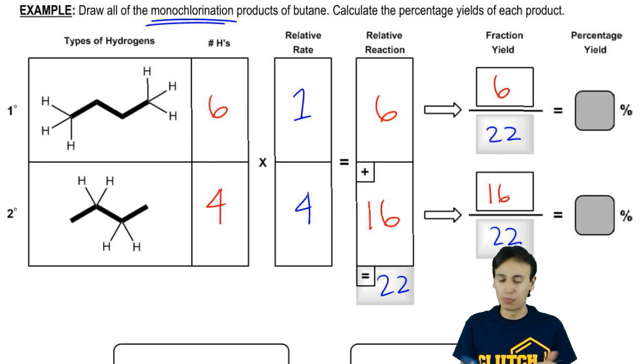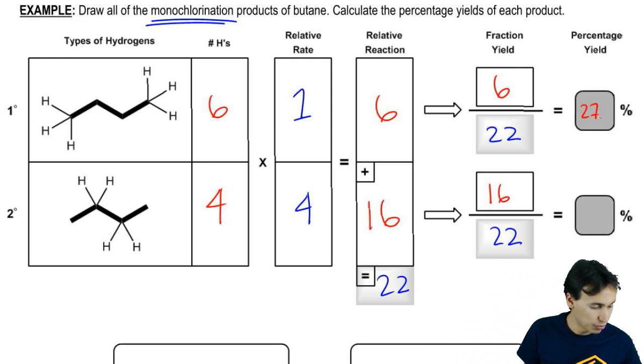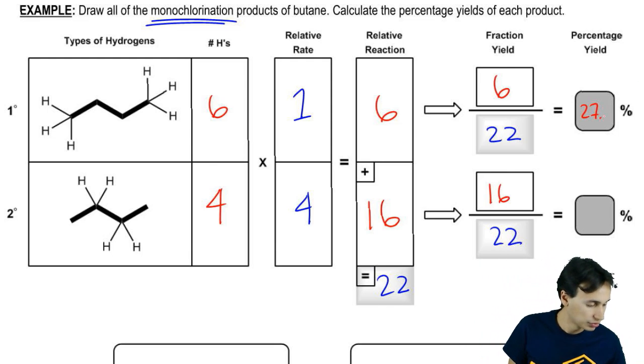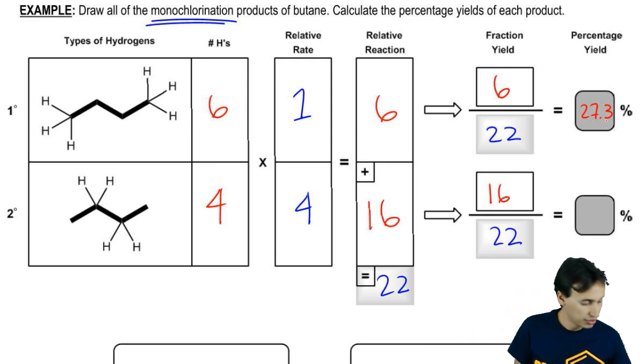You could also use this is pretty simple math, so you could use your iPhone if you wanted to. So I'm an iPhone guy, sorry. So six divided by 22 gives me 27.2% or 0.3, let me round. And then 16 divided by 22 gives me 72.7%.